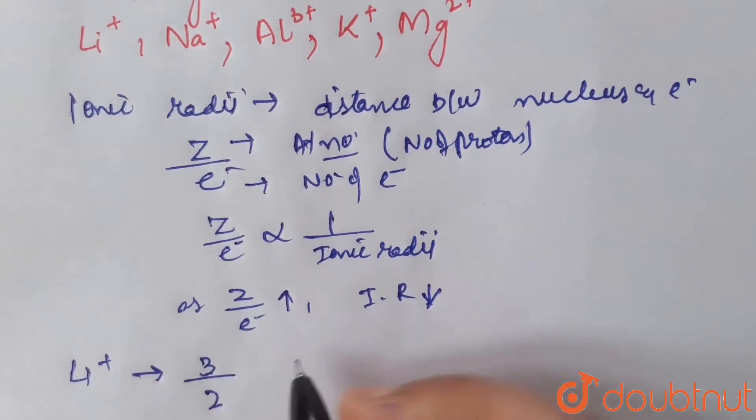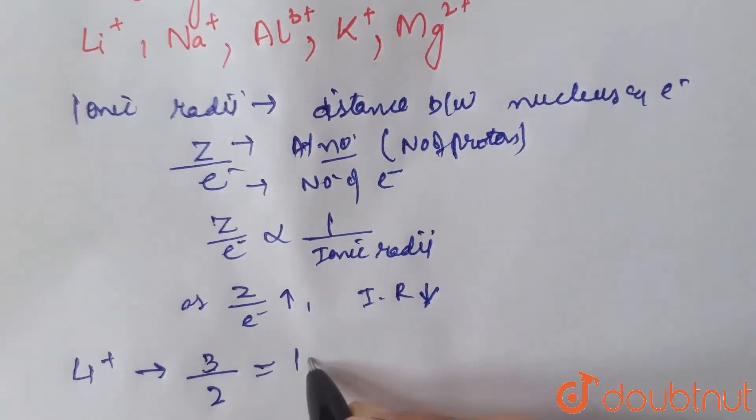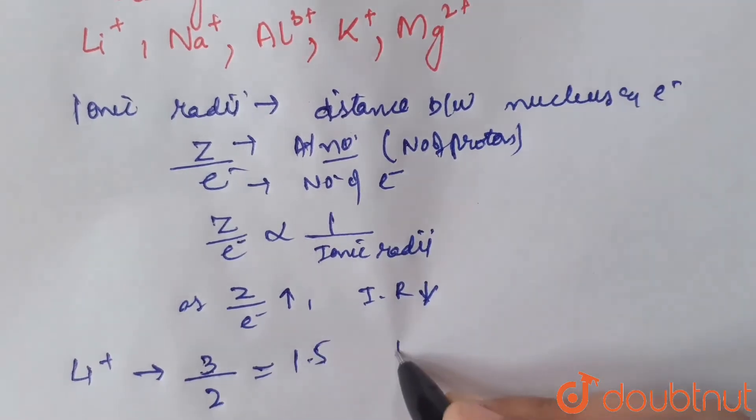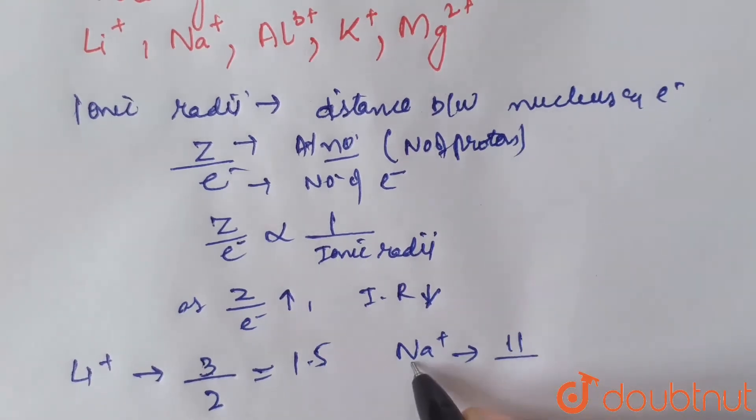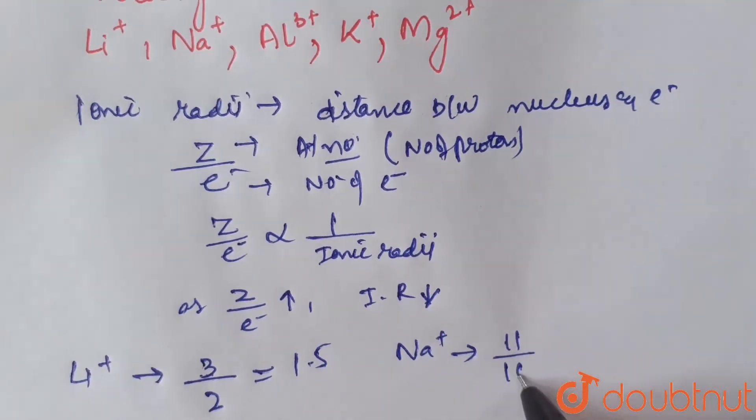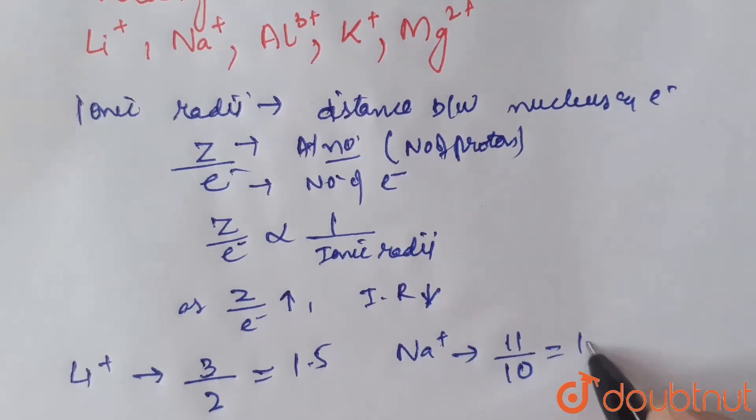Then we have Na+, sodium. Atomic number is 11. As it's Na+ so it has lost one electron, giving 10 electrons. That becomes 1.1.